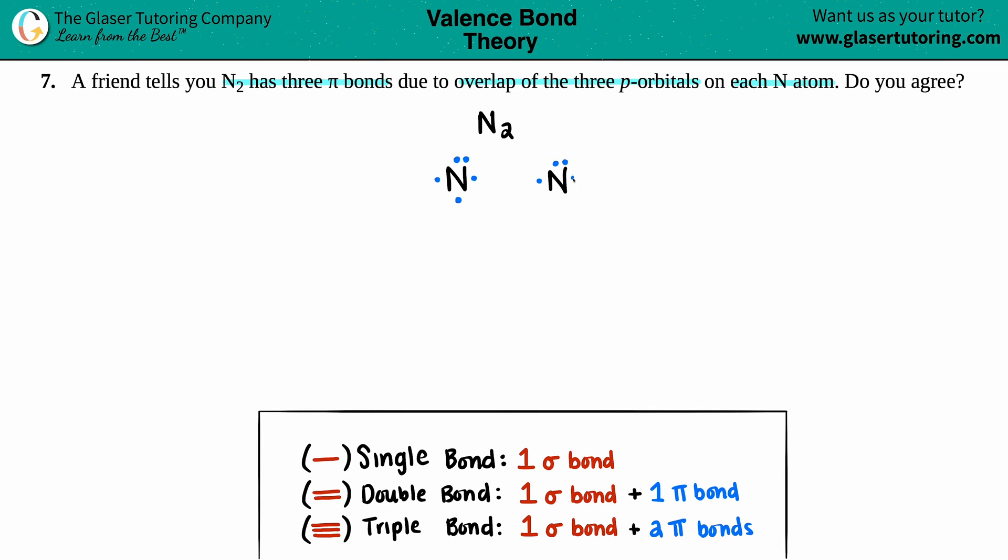So let's make a single bond. I'm going to say one electron, one electron, that's a single bond. And just check for the octet rule. Nitrogen now has two, four, five, six electrons on both sides, so they need another one.